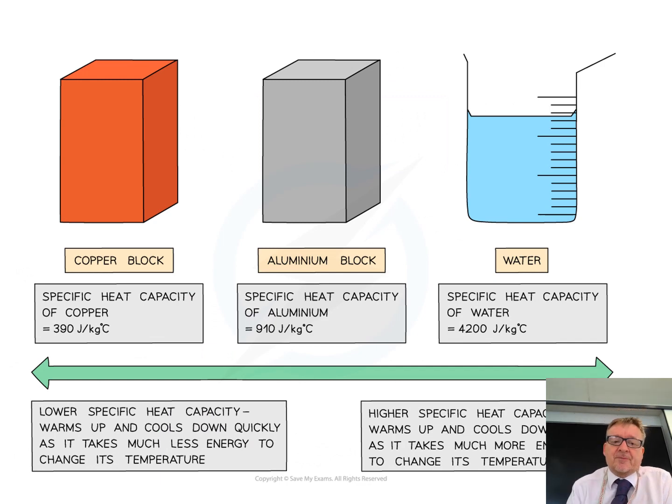Here's some examples. Copper block, an aluminium block, and water. So, copper block specific heat capacity is 390 joules per kilogram. Specific heat capacity of water is 4200 joules per kilogram. Now, what that actually means is, it means that the copper block warms up and cools down quickly. If it's got a high specific heat capacity, it warms up and cools down slowly. And it takes a lot longer for the temperatures to actually change.